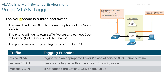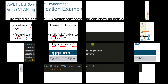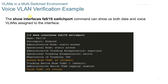A Voice over IP phone is a three-port switch. The switch will use CDP to inform the phone of the voice VLAN, and the phone will tag its own voice traffic and can set Class of Service or CoS for layer 2. The phone may or may not tag frames from the PC. As an example of VLAN verification, the show interface FA0/18 switchport command shows both data and voice VLANs assigned to that interface.